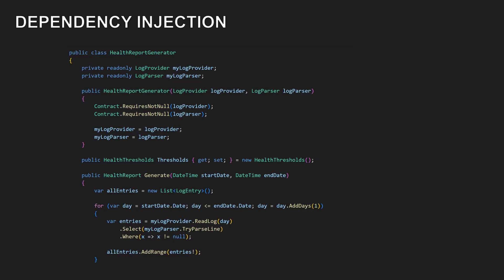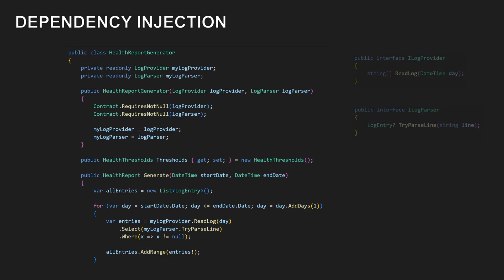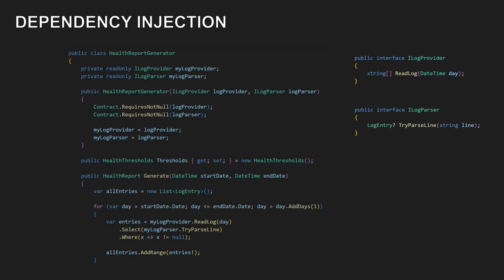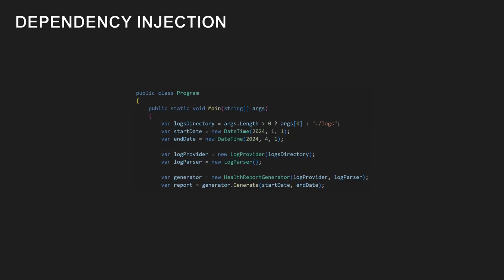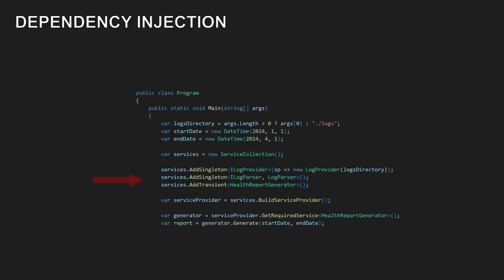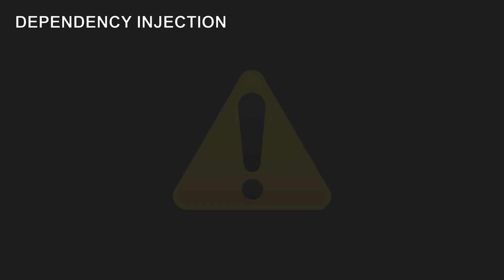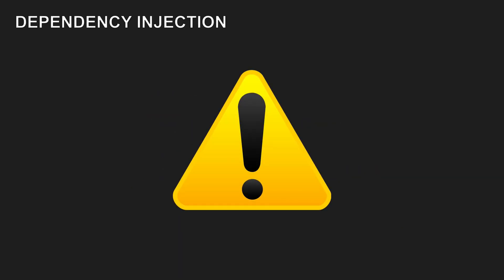Dependency injection doesn't require interfaces, but they are often used to make components testable and replaceable independently. We don't need a dependency injection container to apply dependency injection, but such frameworks make wiring larger object graphs much easier. Be careful, though — not every new belongs outside. Only extract what's truly a separate concern, as exposing implementation details can increase complexity instead of reducing it.